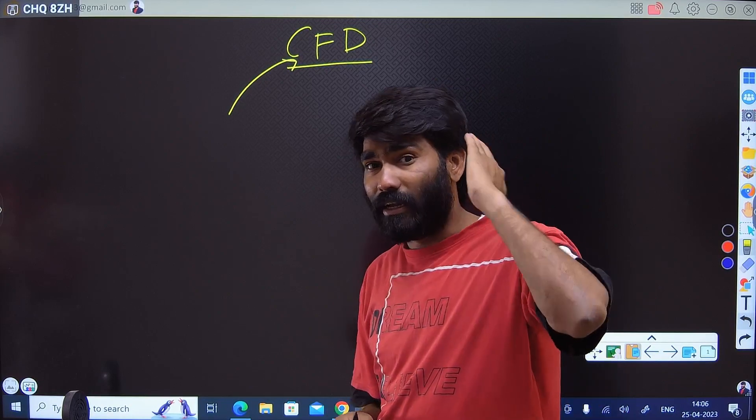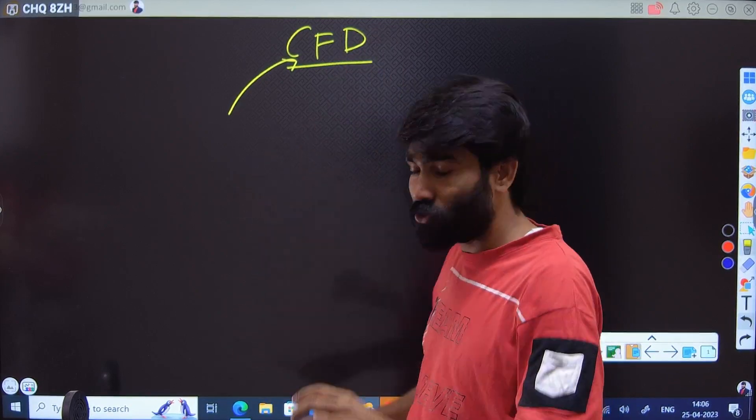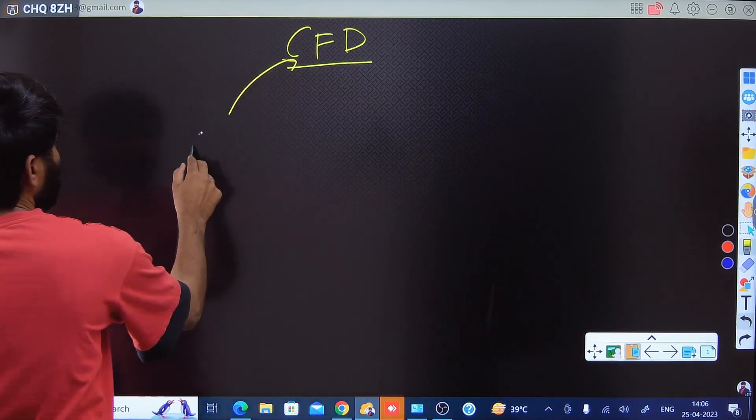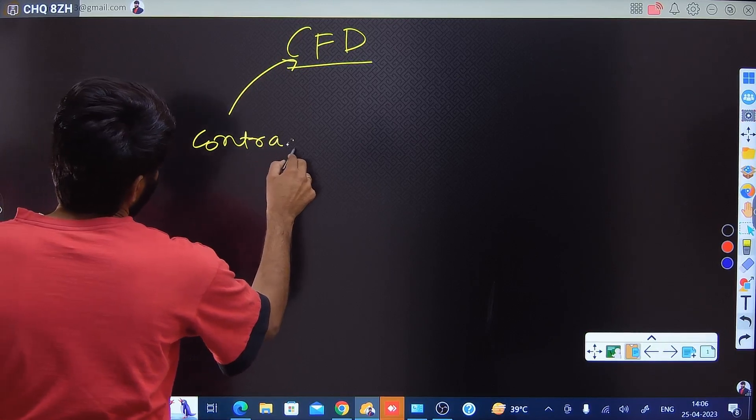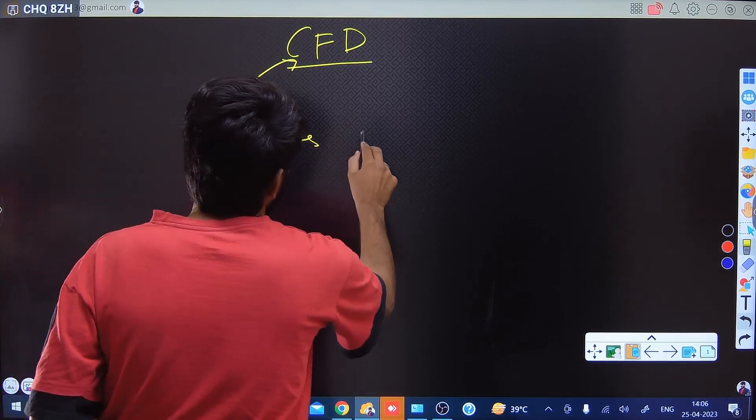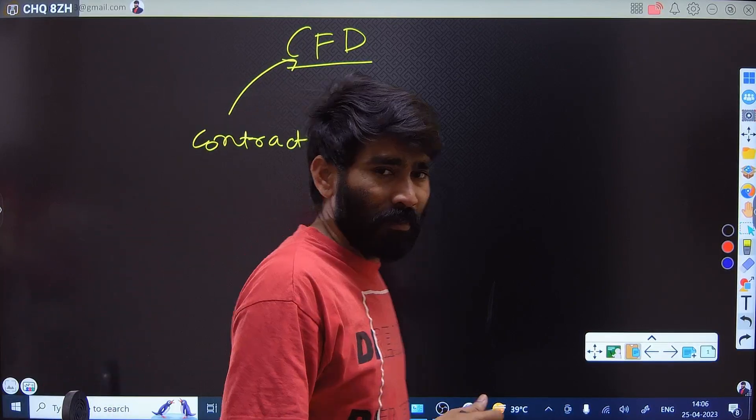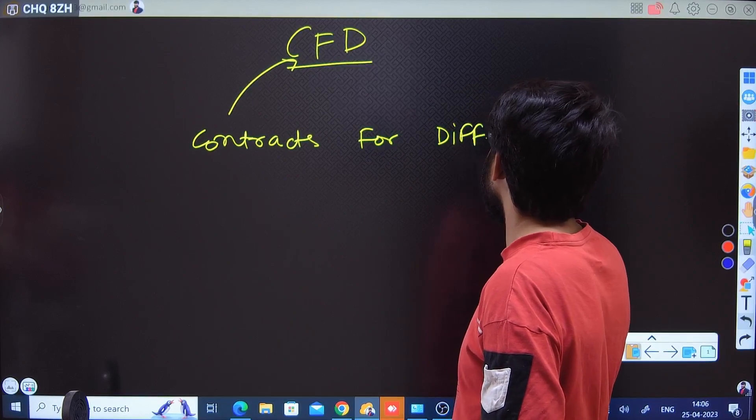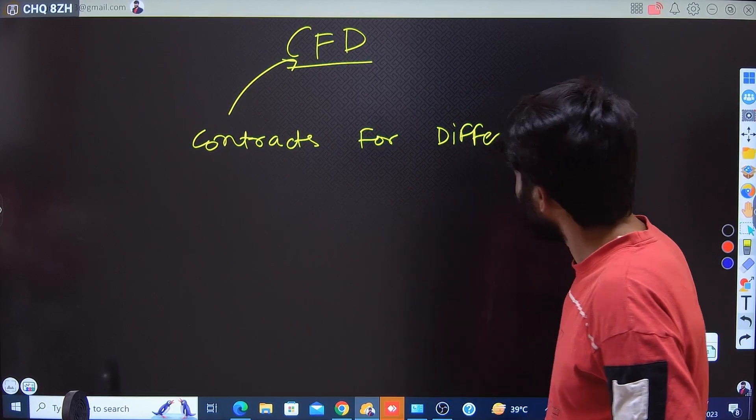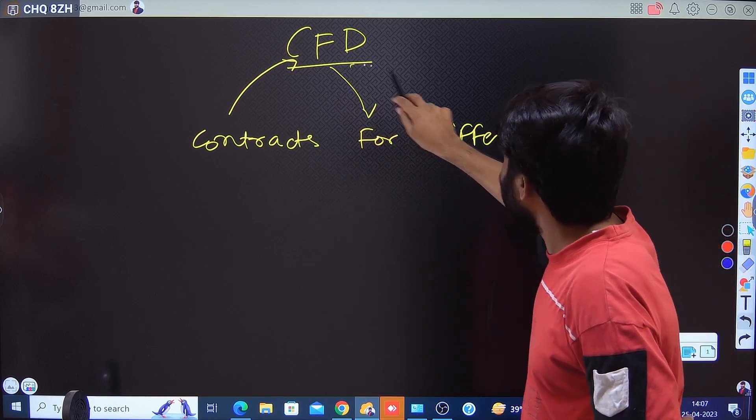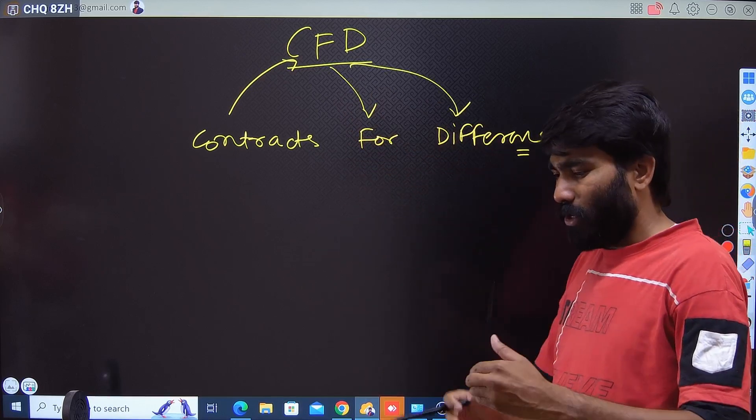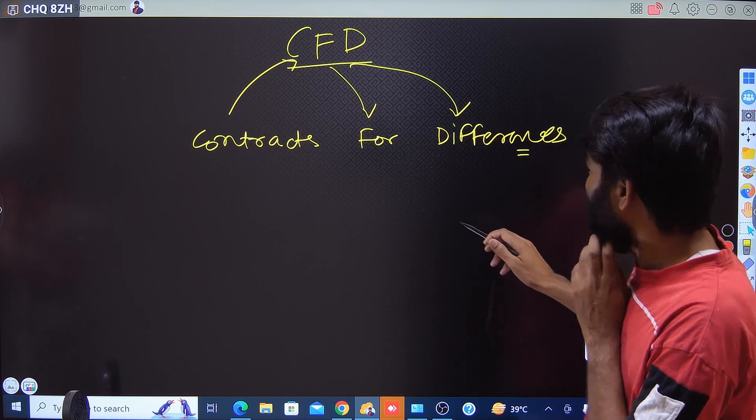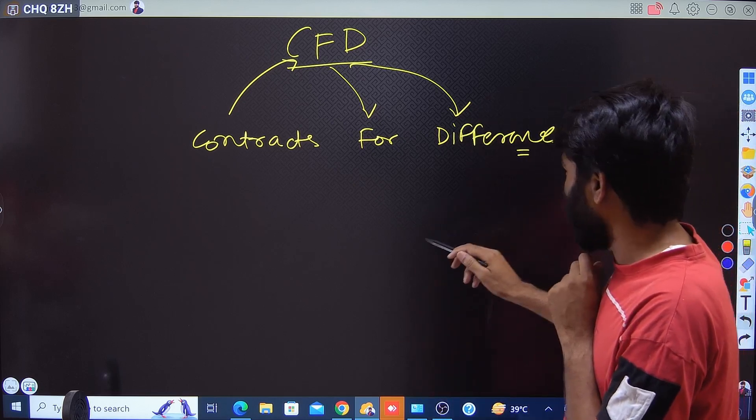In CFD, contract for differences, if you see the word C stands for contract, F means for, and D means differences. So here you can sign contracts to get exposure of different financial instruments through differences, through pricing differences.